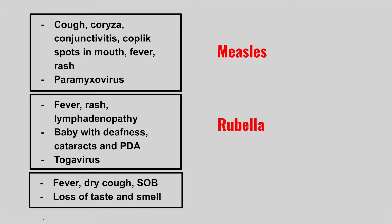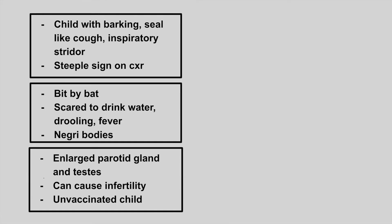The next patient is going to have a fever, dry cough, shortness of breath, and very characteristically they have a loss of taste and smell. This is COVID-19, known as coronavirus. The next patient is going to be a child with a barking seal-like cough, an inspiratory stridor, and we see a steeple sign on chest x-ray. This is parainfluenza virus causing croup.